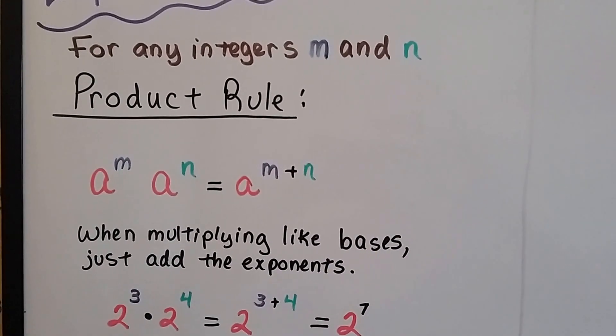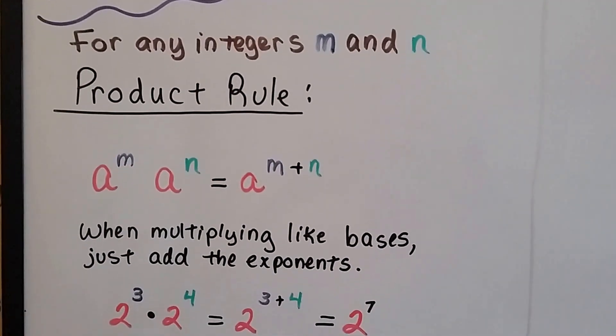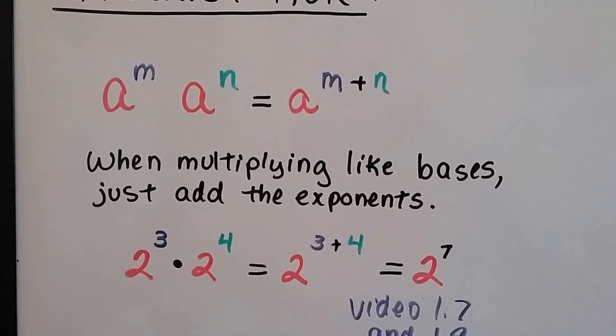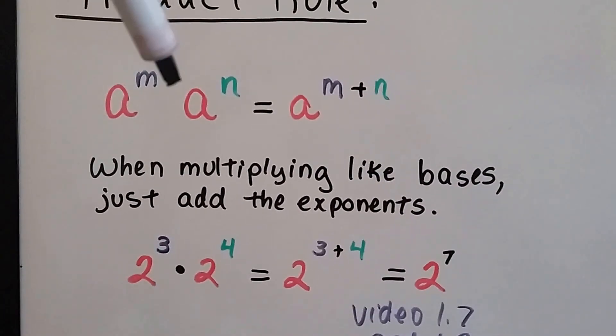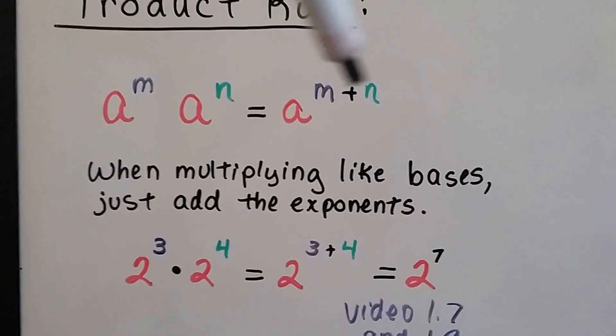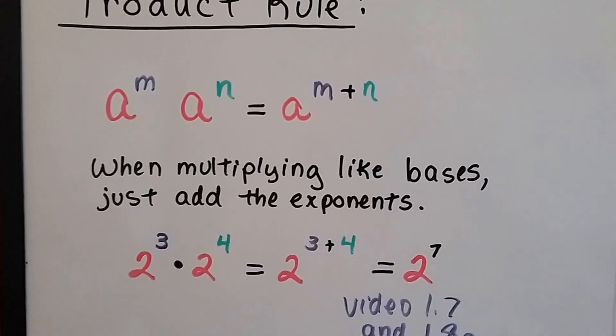So for any integers m and n, that's what we're going to use. Here's the product rule. When we have a to the m power and it's being multiplied to a to the n power, it's going to just add the exponents. That's the product rule, just adding them.